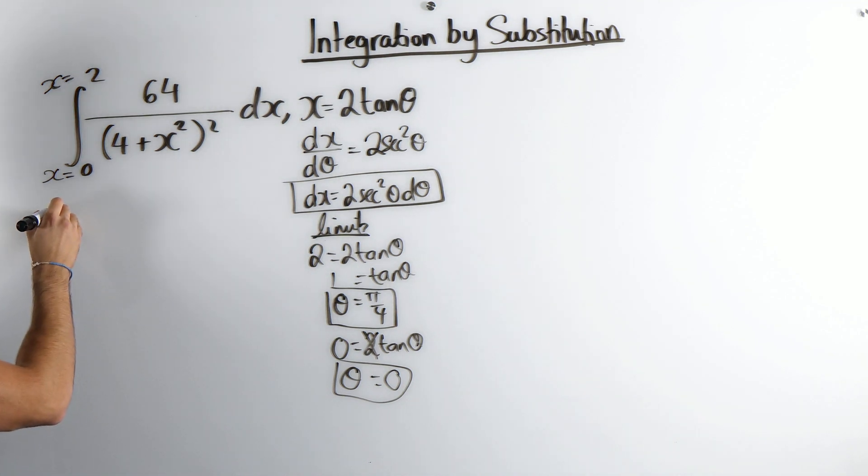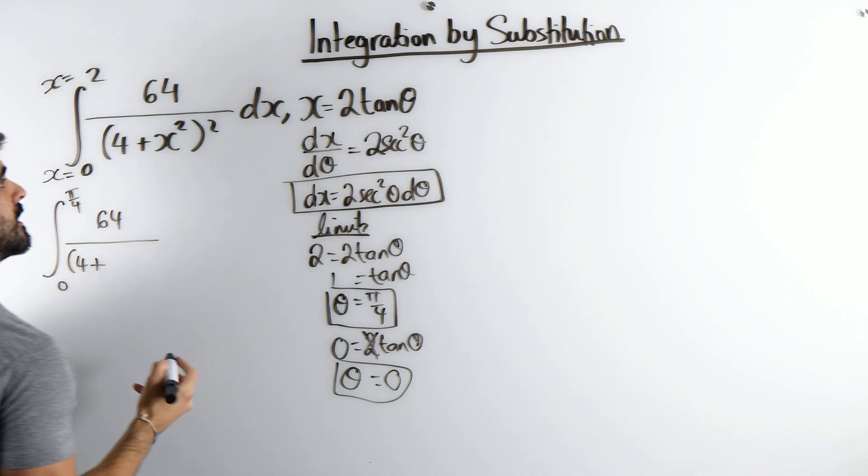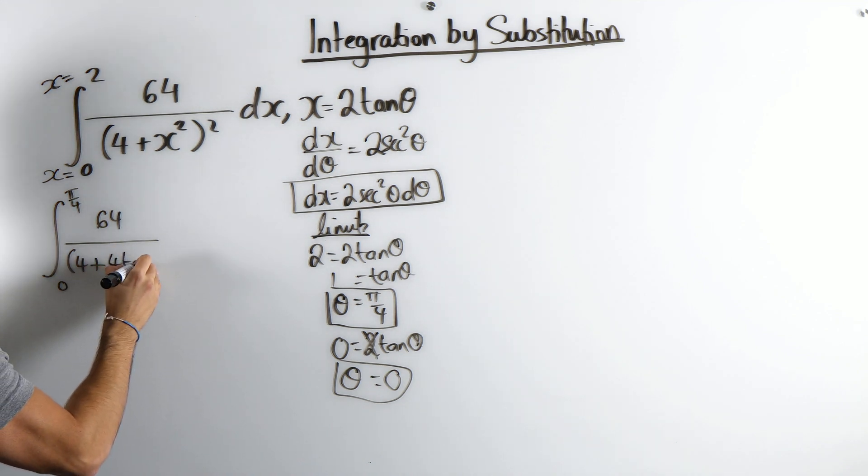So we have the integral between pi over 4 and 0 of 64 over 4 plus x squared. When you square this, you get 4 tan squared theta.